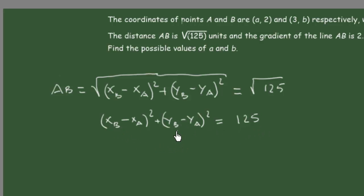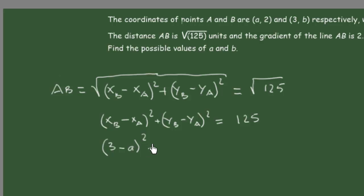We now replace X_B, X_A, Y_B, and Y_A with their values. X_B is 3, X_A is A, so we get (3 minus A) squared. Y_B is B, Y_A is 2, so we get (B minus 2) squared. This gives us (3 minus A) squared plus (B minus 2) squared equals 125. This is our first equation.